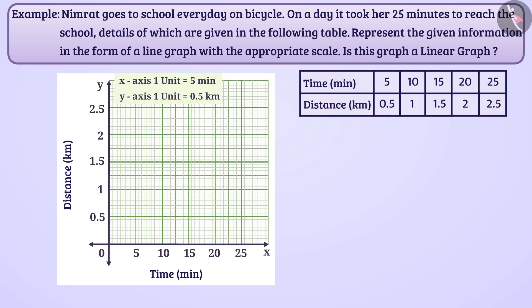We will now plot the points for different situations. A distance of 0.5 km has been covered in 5 minutes. We will mark point P at coordinates (5, 0.5), which will represent this position on the graph. To show this, we move 1 unit to the right from the origin point, then 1 unit upward. This will bring us to point P.